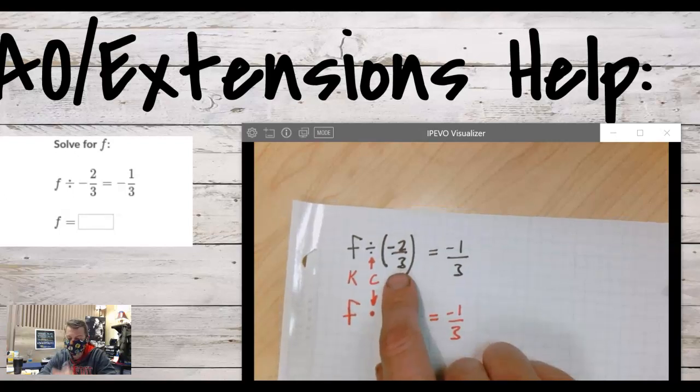The thing we want to do is get rid of the division by fraction and turn it into multiplication.